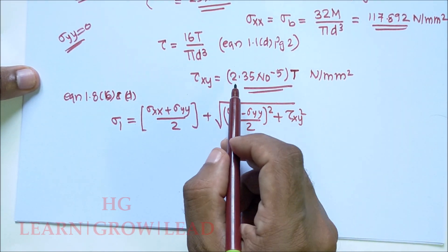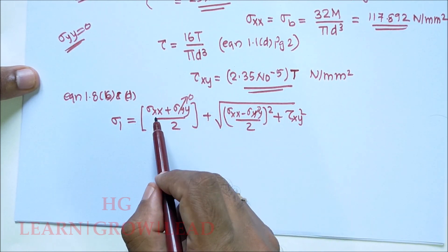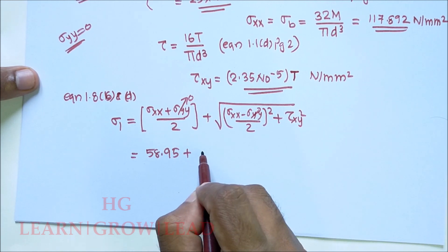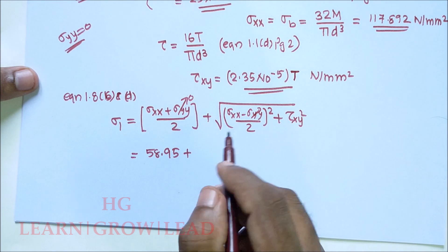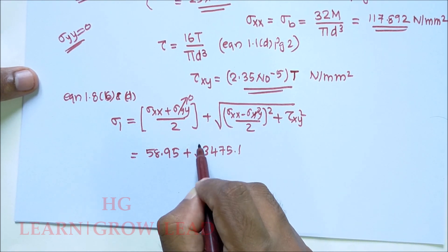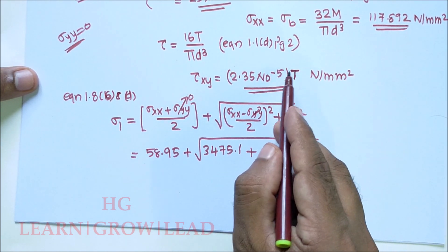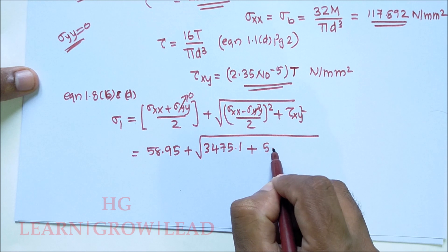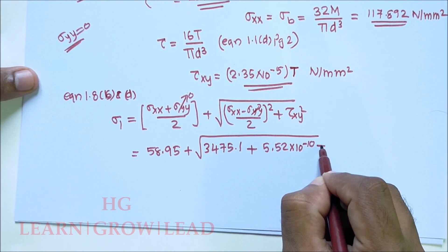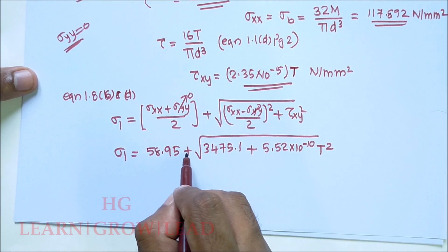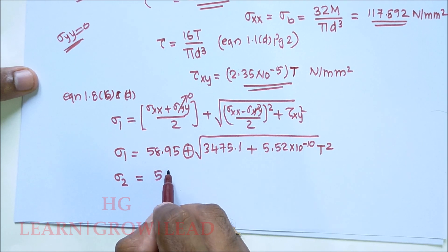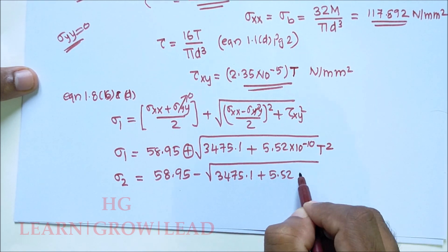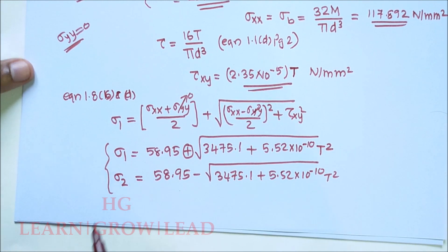Substituting the values with sigma_yy = 0: sigma_1 = 117.892/2 + √(58.95² + tau_xy²) = 58.95 + √(3475.1 + 5.52 × 10⁻¹⁰ × T²). Sigma_1 and sigma_2 values are obtained, and now we can apply theories of failure.